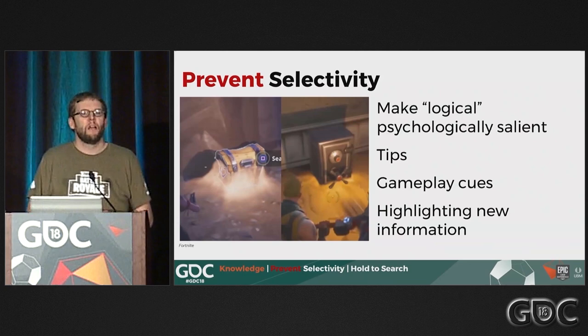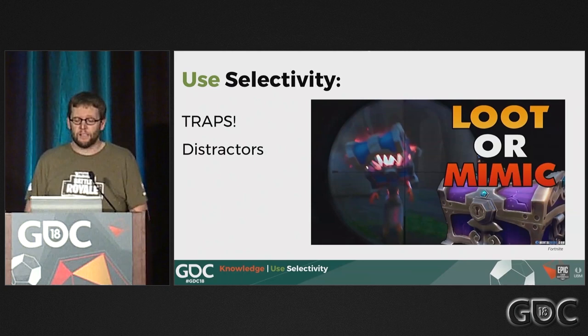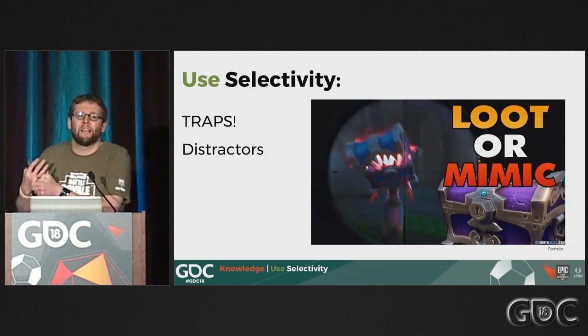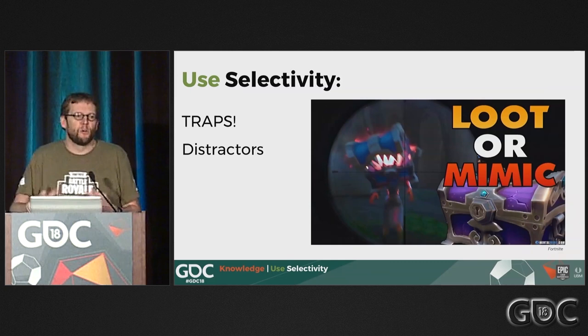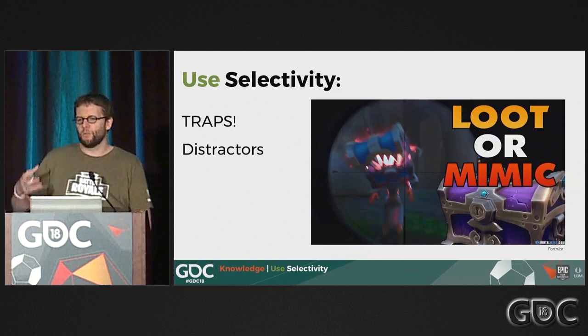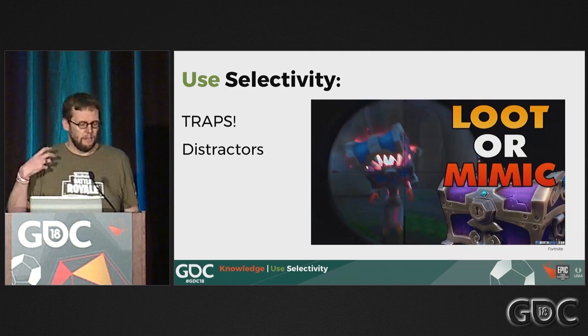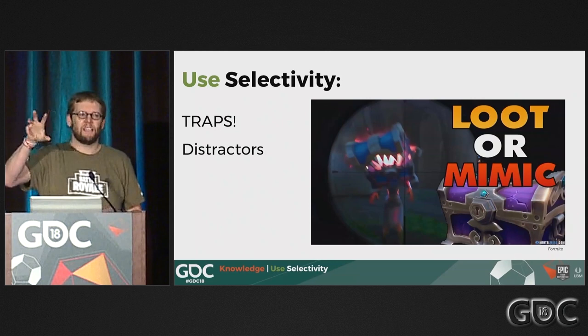You can use selectivity against players using traps and distractors. A mimic is a great example — players see chests, which is a very emotional thing, they run over and activate it, and it jumps up and attacks them. They didn't spend the time to think about it or notice it was in a funny situation. In hidden object games, you put nice glowing pretty things amongst where players actually need to click, dragging their attention away from where they need to be.